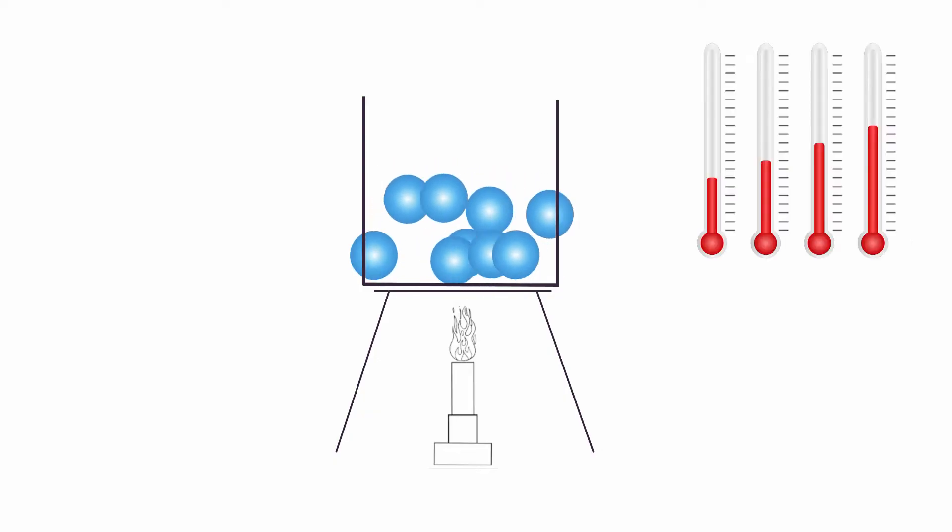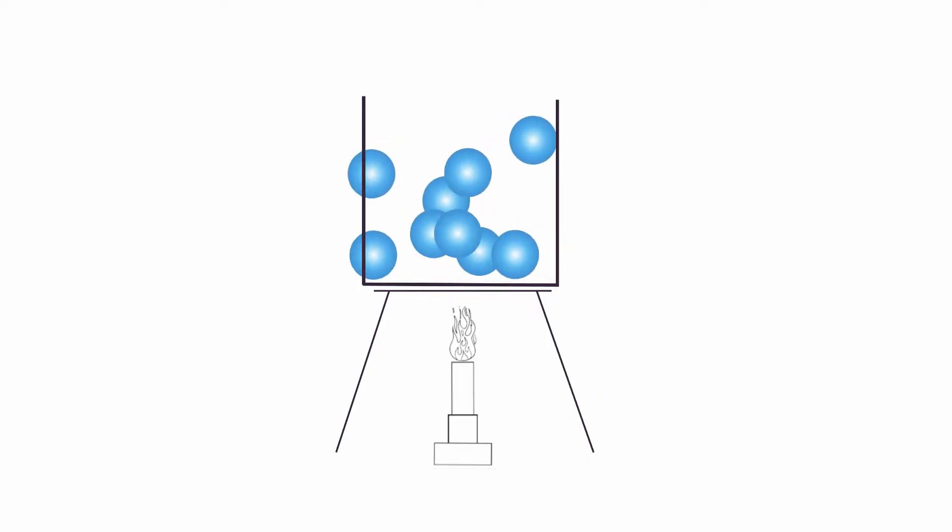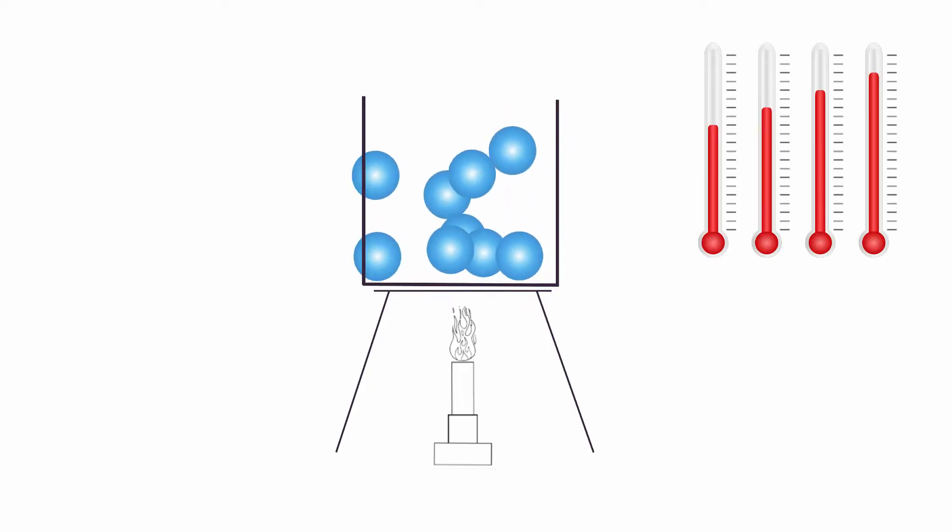If we add enough heat to a liquid, the particles move around so much that the substance will become less and less dense. If we keep heating, the particles will eventually rise up out of the liquid and have enough kinetic energy to move freely. At this point the substance becomes a gas. The process of changing from a liquid to a gas is called evaporation.